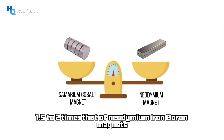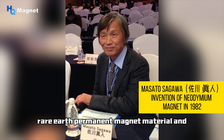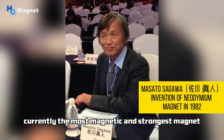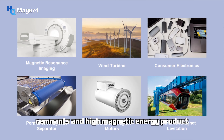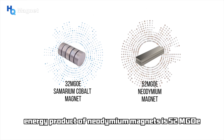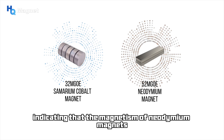Neodymium magnet is a permanent magnet made of an alloy of neodymium, iron, and boron. It is the third generation rare earth permanent magnet material and currently the most magnetic and strongest magnet. It has the characteristics of high remanence and high magnetic energy product, which makes it widely used in various devices. The maximum magnetic energy product of neodymium magnets is 52 megagauss oersteds, while that of samarium cobalt magnets is 32 megagauss oersteds, indicating that the magnetism of neodymium magnets is much higher than that of the previous generation.